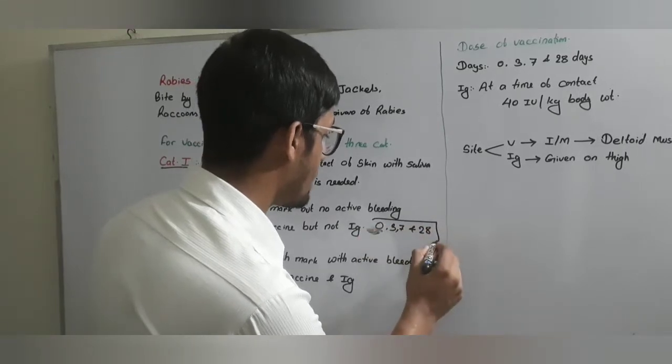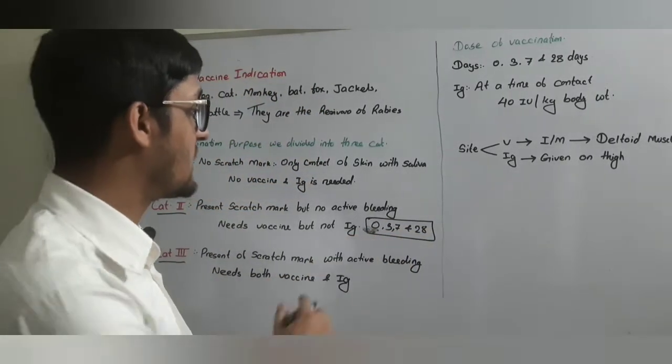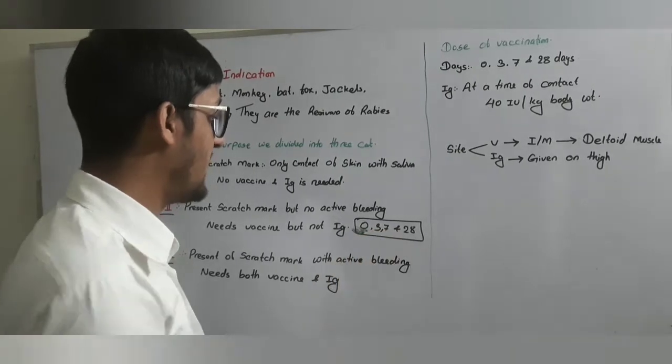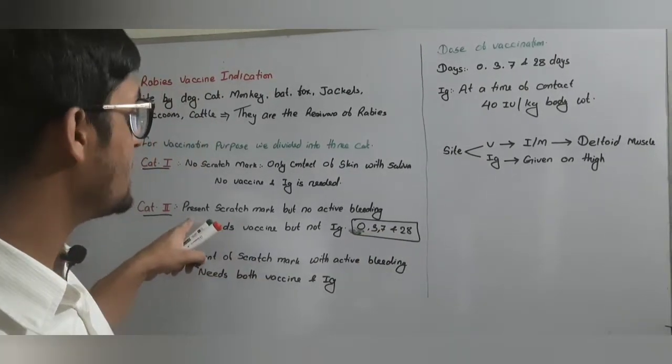Four doses of vaccine is required that is zero, three, seven and 28 days and no immunoglobulin is needed.